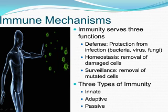Passive immunity. Passive immunity is borrowed from another source, and it lasts for a short time. For example, antibodies in a mother's breast milk provide a baby with temporary immunity to diseases the mother has been exposed to. This can help protect the baby against infection during the early years of childhood.